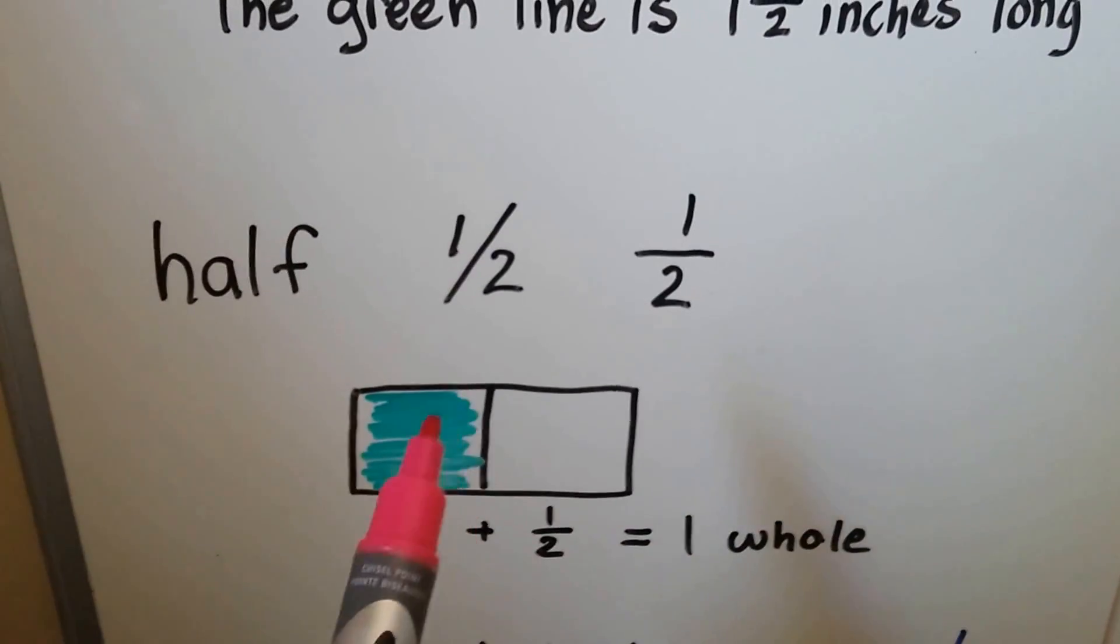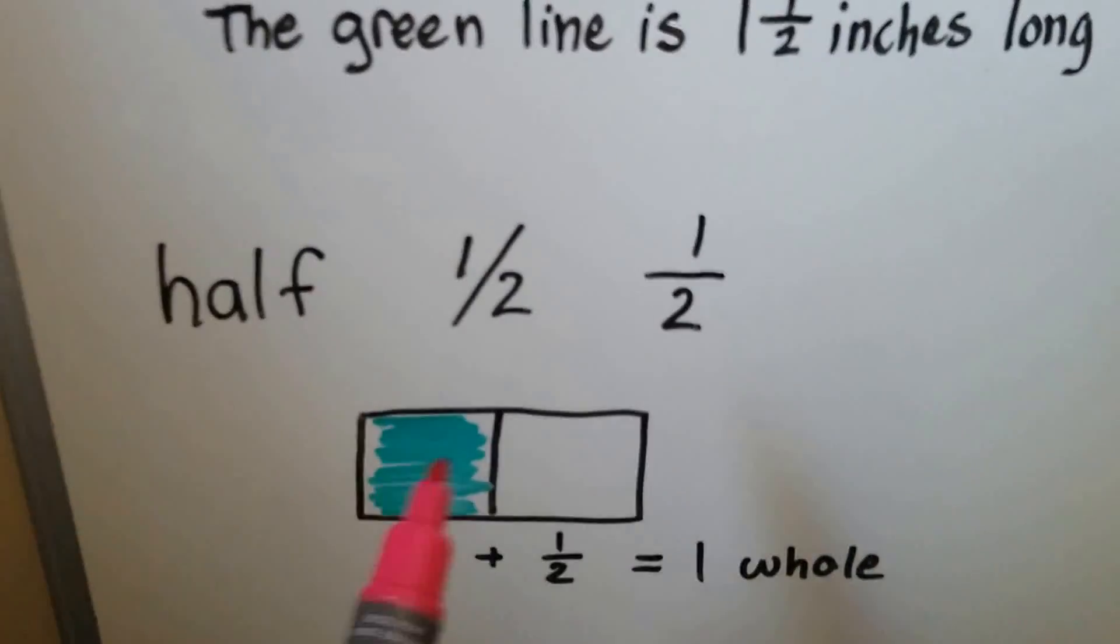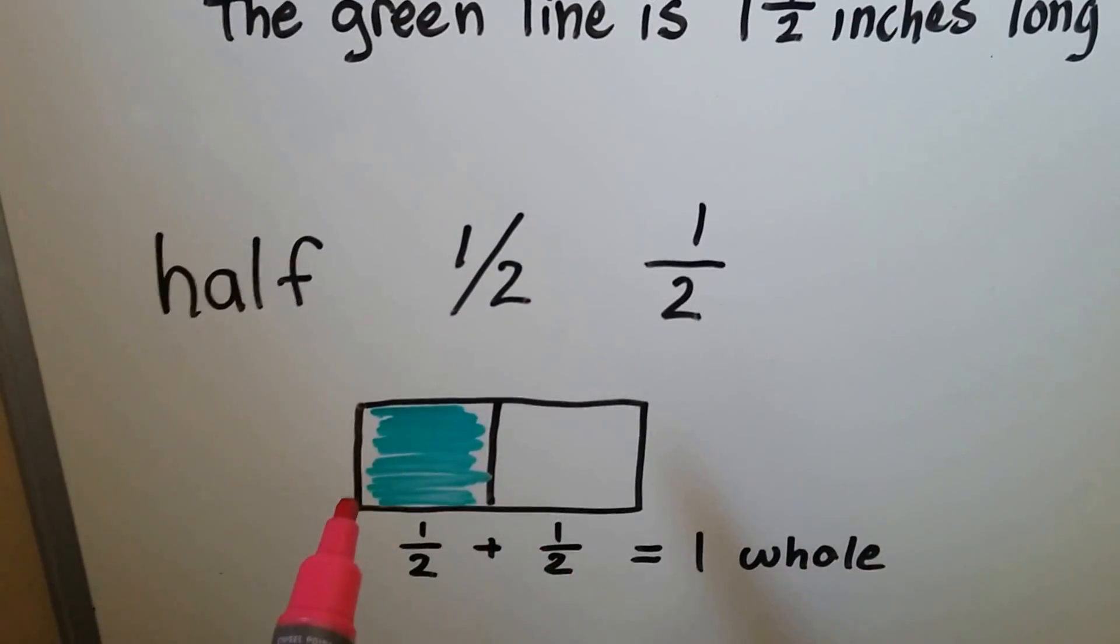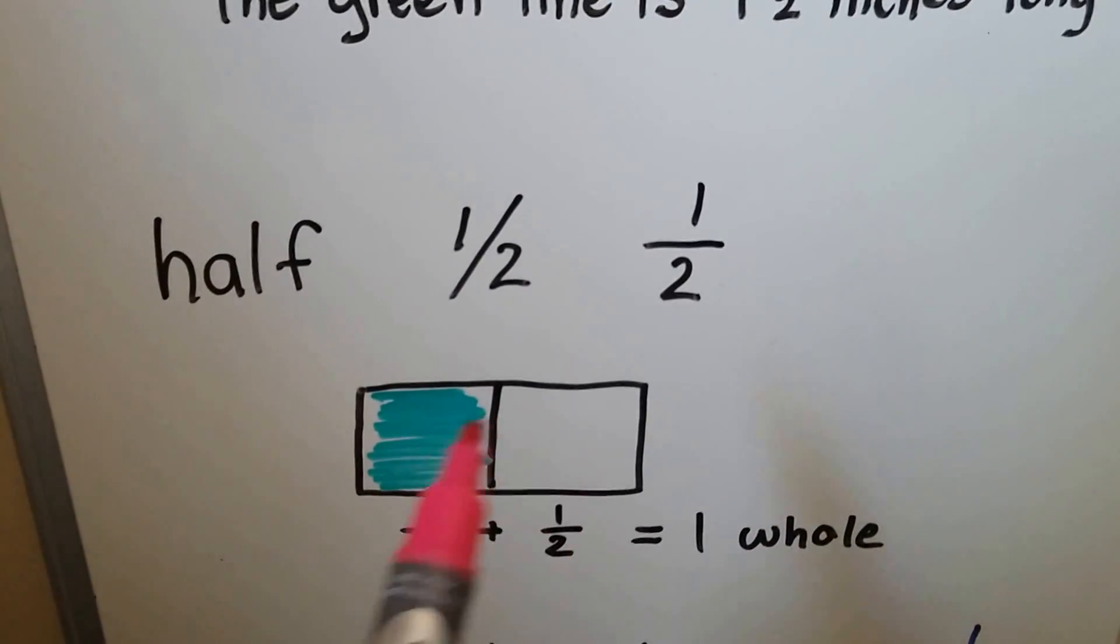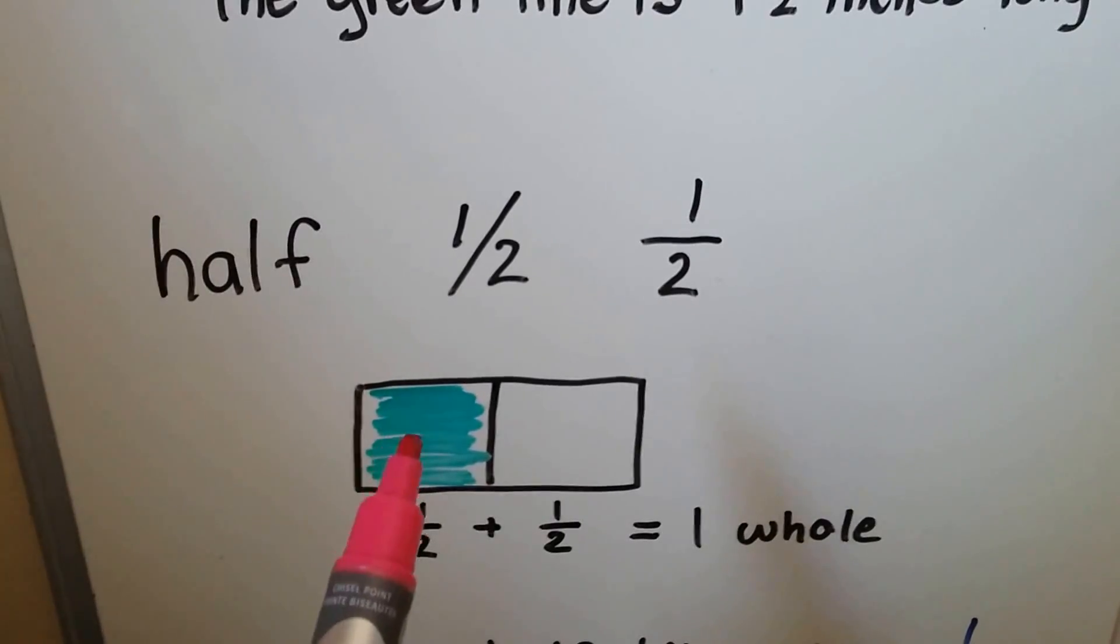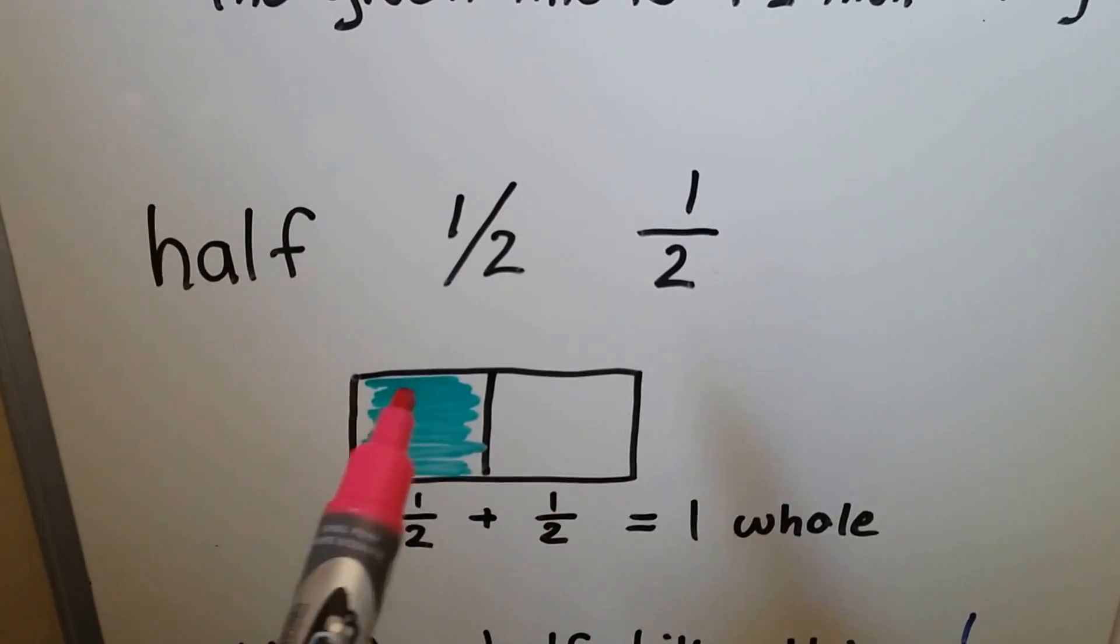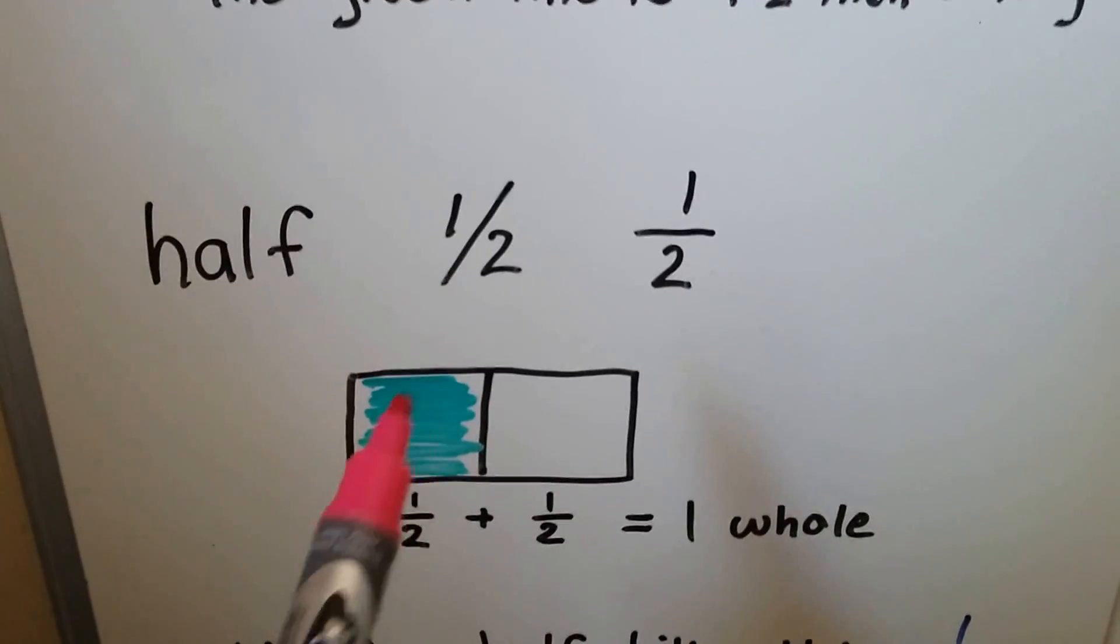Half is when you split something that's whole, like a candy bar, and you want to share it with somebody, and you split it right down the middle so that everyone gets an equal share. That would be half and that would be half. This green part is half of the rectangle.